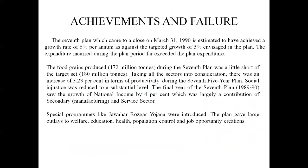What were the achievements and failures of the Seventh Five-Year Plan? The plan, which came to a close on March 31st, 1990, is estimated to have achieved a growth rate of 6% per annum against the targeted growth rate of 5%. The plan was able to exceed its targeted growth rate, which is why we can term it one of the successful plans in Indian planning history. However, the expenditure incurred during the plan period exceeded the planned expenditure.